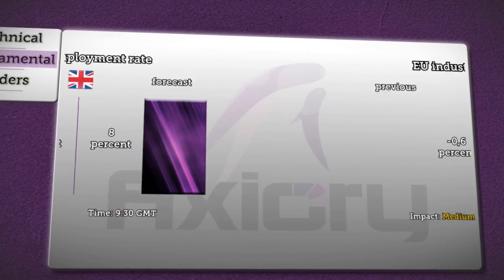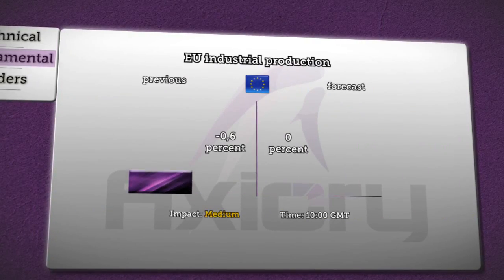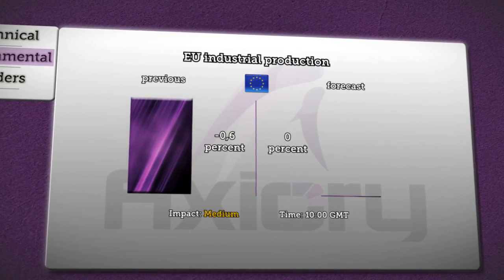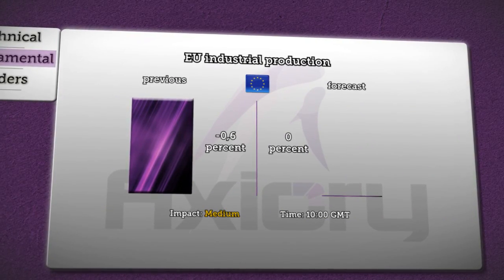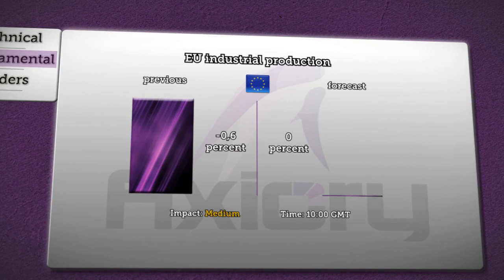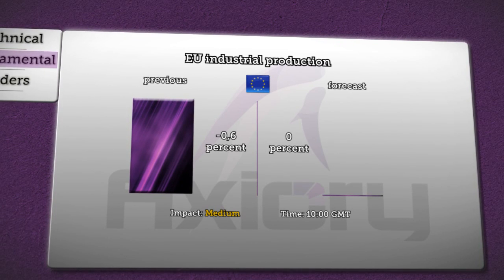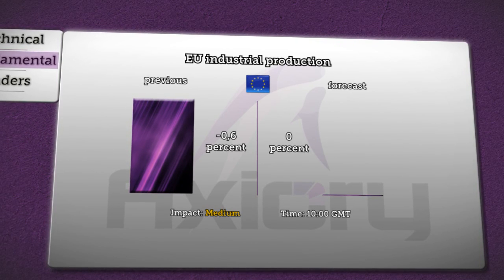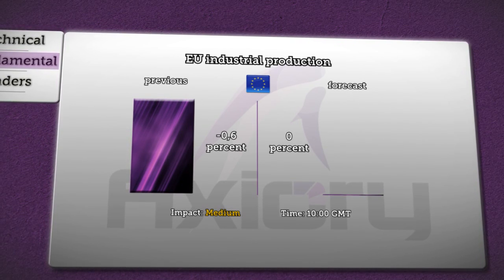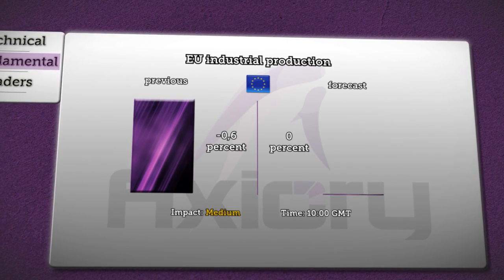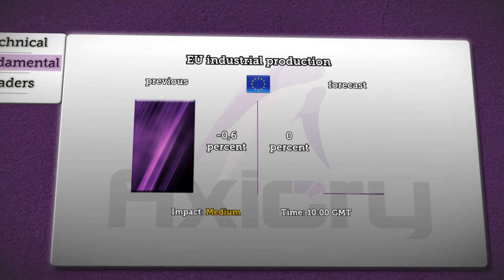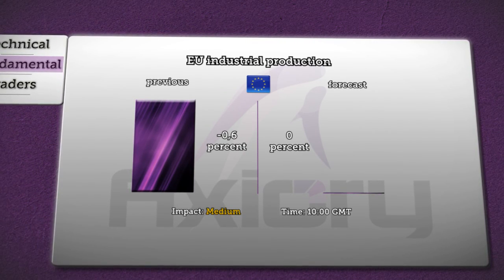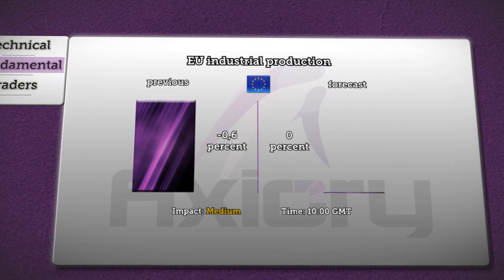At 10 a.m. GMT, Eurostat will publish data about industrial production in the Eurozone. Previous figures showed a fall of 0.6%, and today it is expected to stagnate at 0%, with a medium impact on the euro.